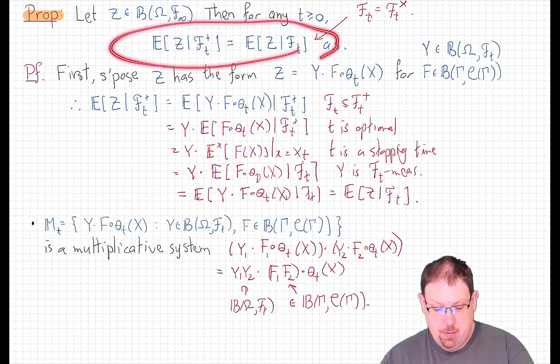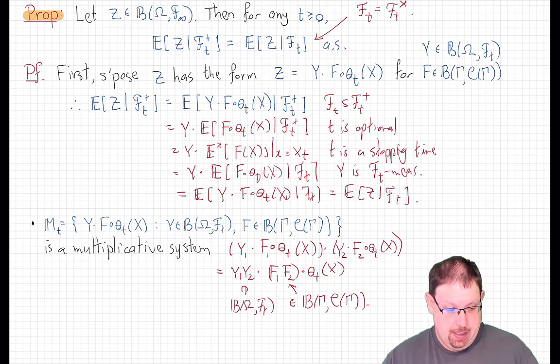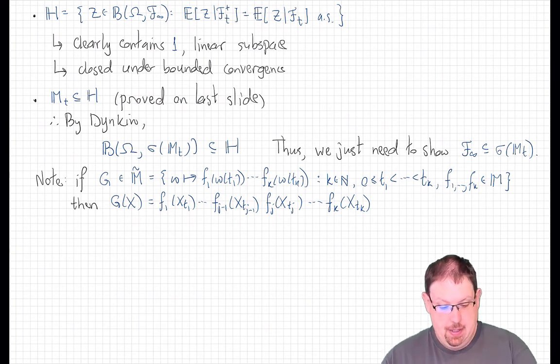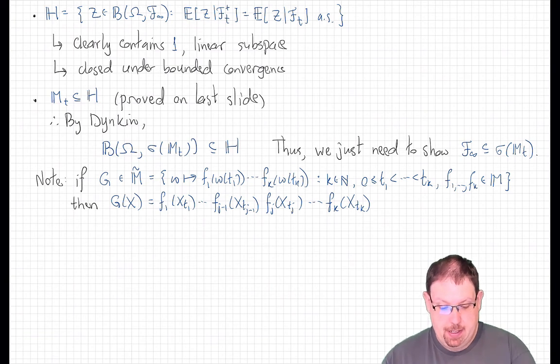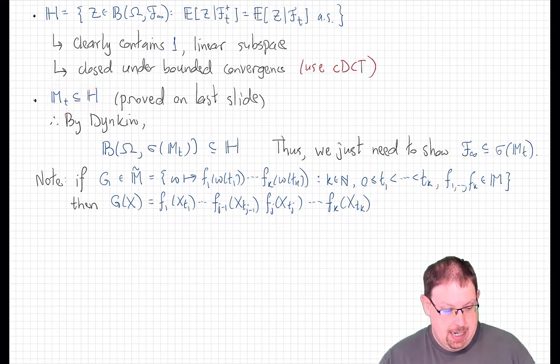We've shown that this property we're interested in holds for this multiplicative system, and we'd like to show that it holds here. So we're going to define H to be the set of all functions in here for which this holds. H will denote the set of all bounded F_∞ measurable functions with the property that this curious conditioning restriction applies. This space clearly contains the identity function 1. It's also a linear subspace due to the fact that conditional expectation is linear. And it is also closed under bounded convergence using standard arguments, although you may want to use the conditional dominated convergence theorem here. We showed on the last slide that our multiplicative system M_t is contained in H, and therefore, by Dinkin's multiplicative system's theorem, the space of all bounded functions that are sigma of M_t measurable is contained in H.